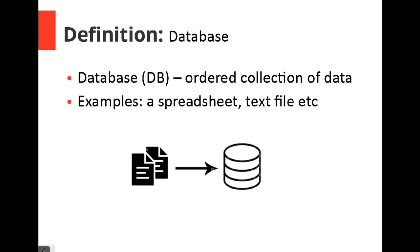A database is an ordered collection of data. The main idea behind this definition is the word 'ordered' and the word 'collection.' A database needs to be in an orderly manner such that the main purpose of retrieving data will be easily achieved. If data is collected in a disorganized manner, it will be very difficult to access this data. So basically, the idea behind a database is to collect data in a particular order.